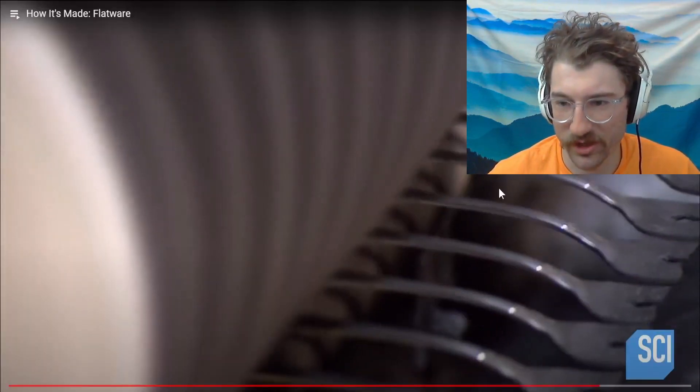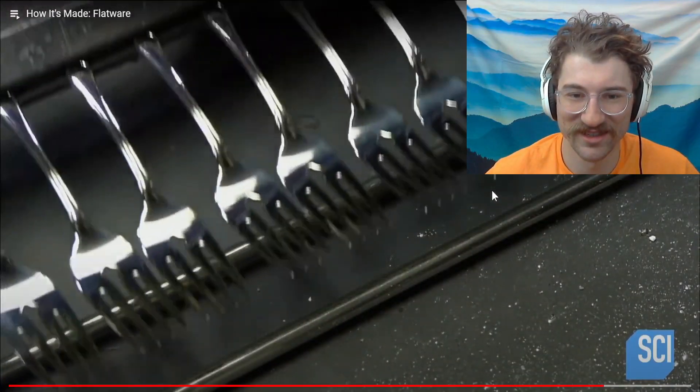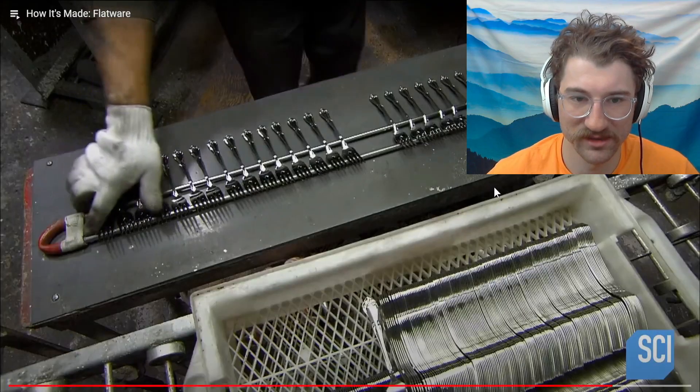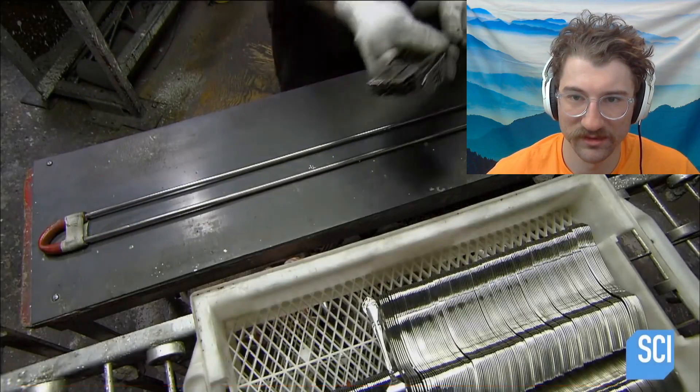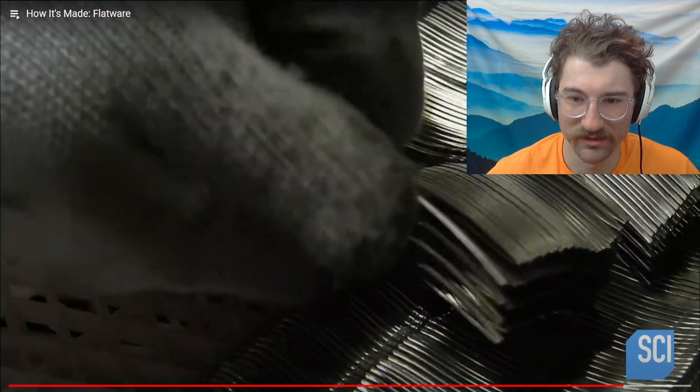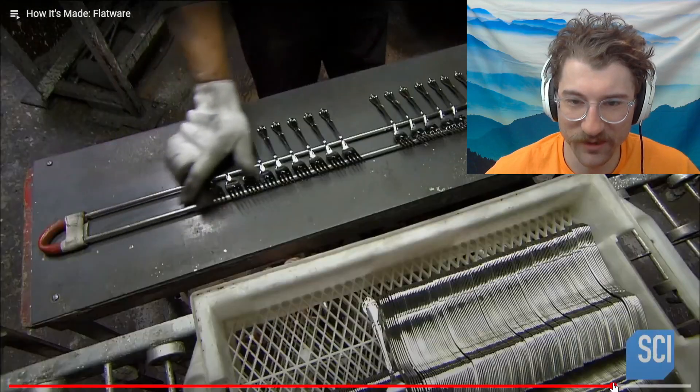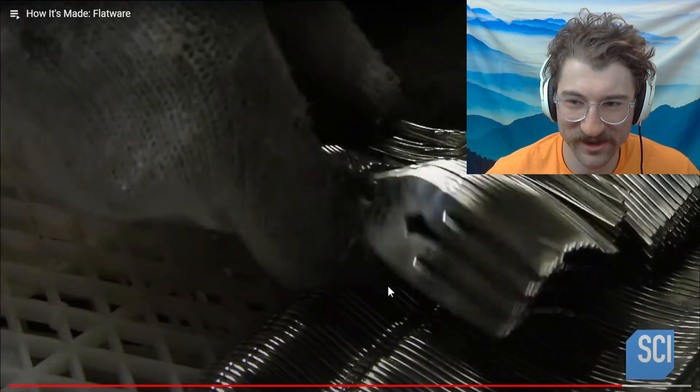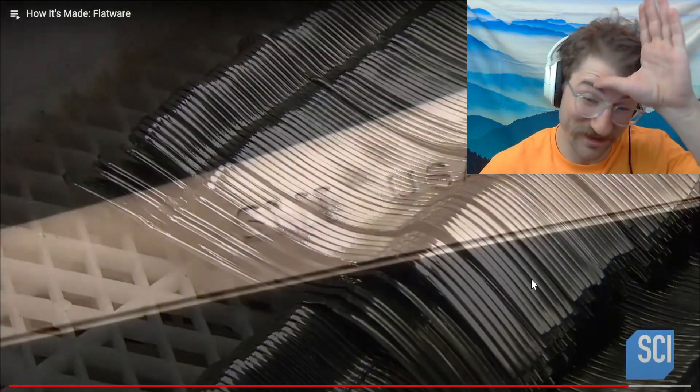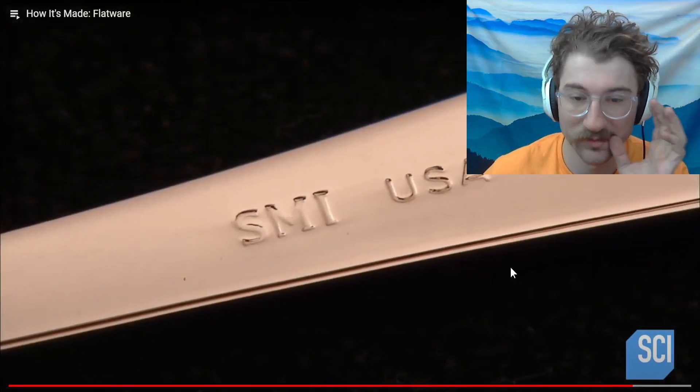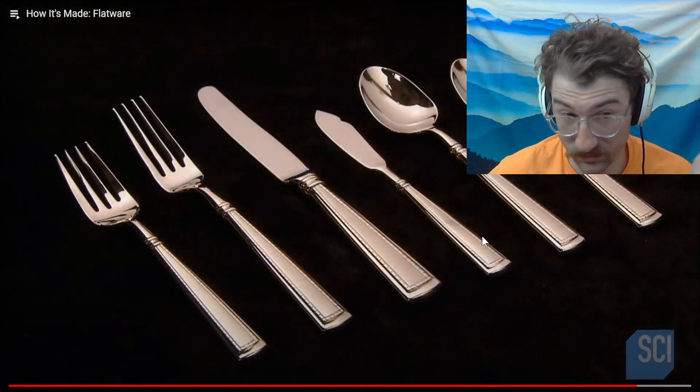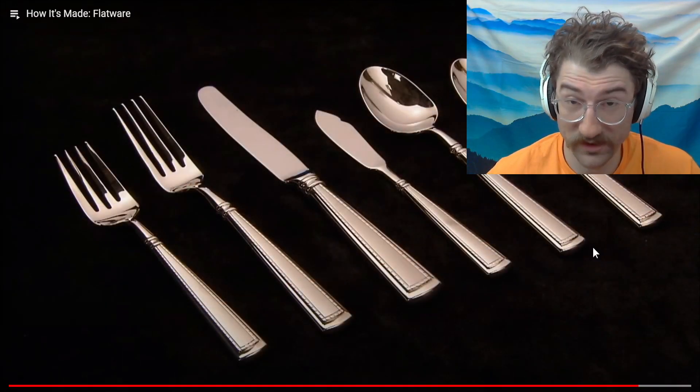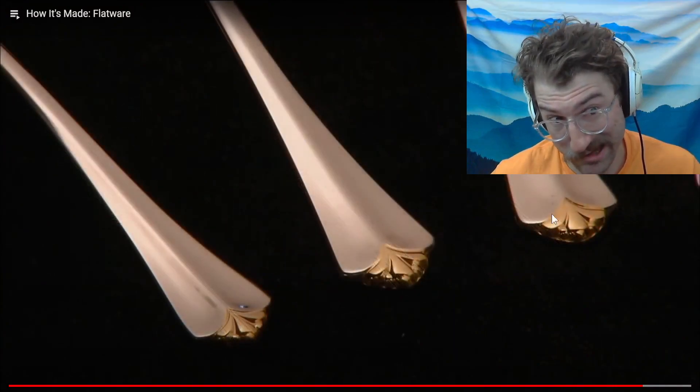The last stop for all the flatware is the buffing equipment. Alright, that answers that question. Polish the surface with a liquid buffing compound until the steel shines nice. The casual flatware are now ready for packaging. That was cool. That guy's awesome. Flatware are now ready for packaging. The fancy ones get dressed up with full or partial plating in silver or gold. Made in the USA. Wow, I'm impressed. No offense to the USA but we really don't make anything anymore.